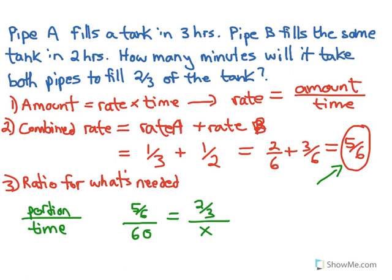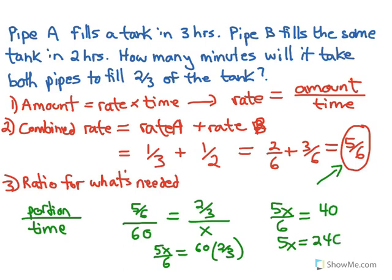So quick cross multiplication, and you get five-x over six equals sixty times two-thirds. So this is five-x over six equals forty. Five-x equals two-forty, just by multiplying the six to both sides. And x equals forty-eight.